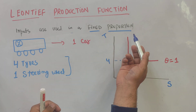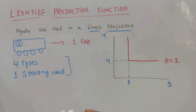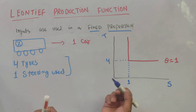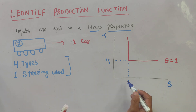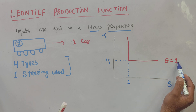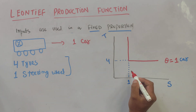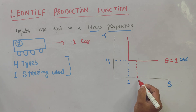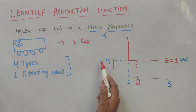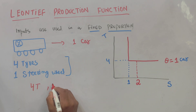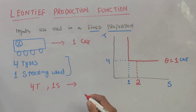In the Leontief production function, inputs are used in fixed proportion. We cannot increase units of output without increasing units of input in the same proportion. One steering wheel and four tires are required to produce one car. Now if I increase the units of steering wheel by two but don't change the units of tires in the same proportion, I will still be able to produce only one car.